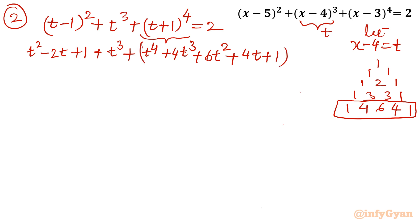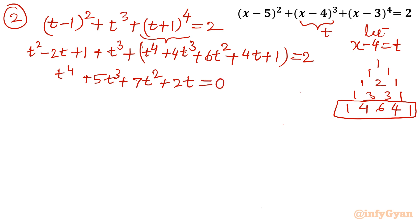Summing everything equal to 2, I collect all terms: t⁴ + 5t³ + 7t² + 2t = 0.